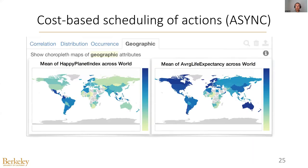Our final operation is to employ asynchronous execution to further reduce the response time of recommendations. The observation is that users typically spend a few seconds or even half a minute before switching to a different tab. Therefore, our idea is to return control to users when we have computed all visualizations for one tab, and compute the rest of the visualizations in the background.